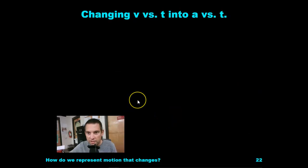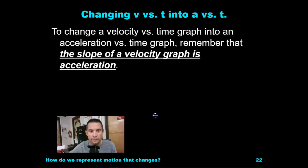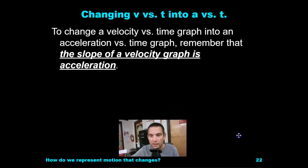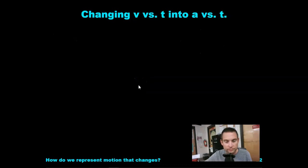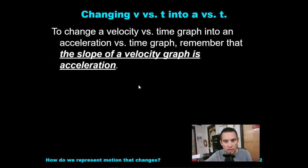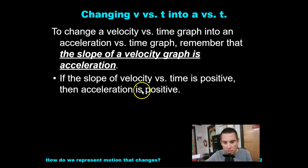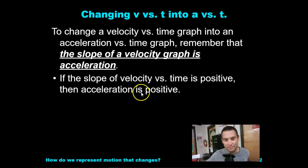Now, changing velocity versus time into acceleration versus time. To change a velocity versus time graph into an acceleration versus time graph, remember that the slope of the velocity graph is acceleration. If the slope of the velocity versus time graph is positive, acceleration is positive.